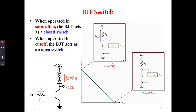When operated in the saturation region, the BJT acts as a closed switch. When operated in the cutoff region, the BJT acts as an open switch. In the saturation region, there is a switch present in the circuit — the BJT — which is acting as a closed switch when the Q point is in the saturation region. It acts as a closed switch, meaning completely on, and current will flow through it.